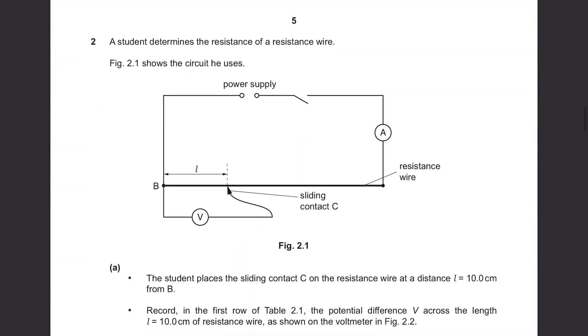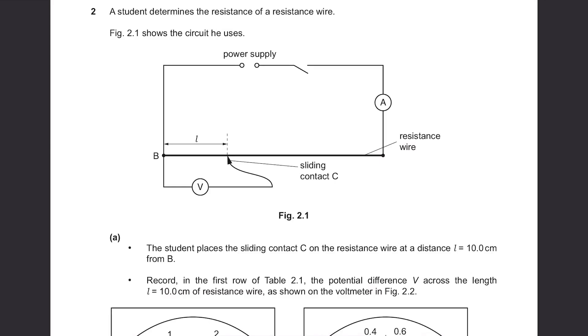Question 2. A student determines the resistance of a resistance wire. Figure 2.1 shows the circuit he uses. There's a power supply and meter resistance wire and voltmeter with a sliding contact C. You can move this sliding contact to vary the length. Part A.